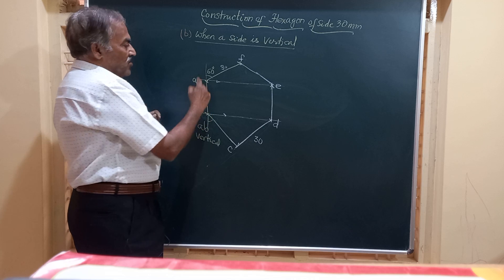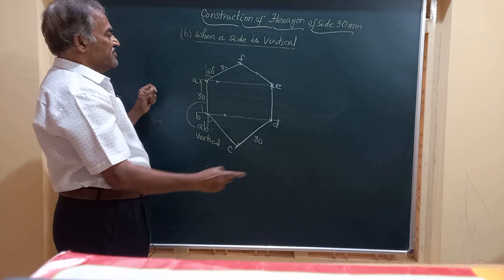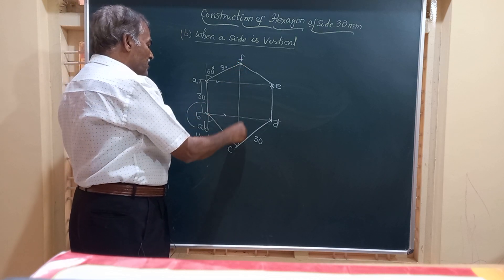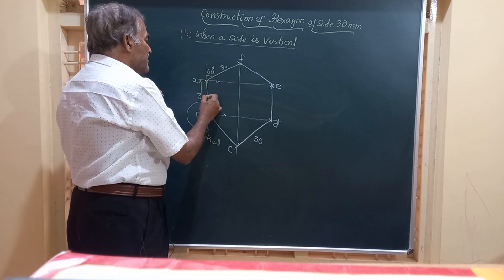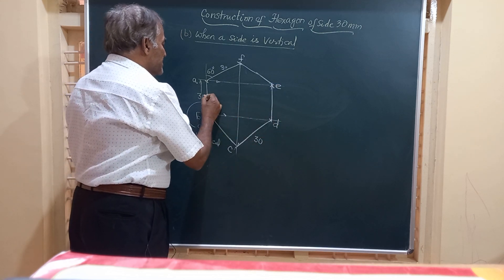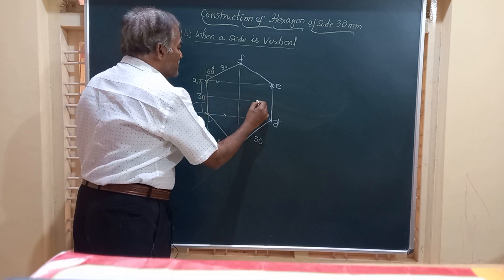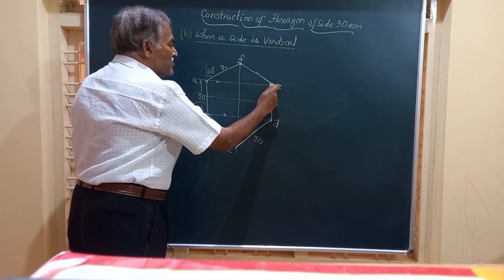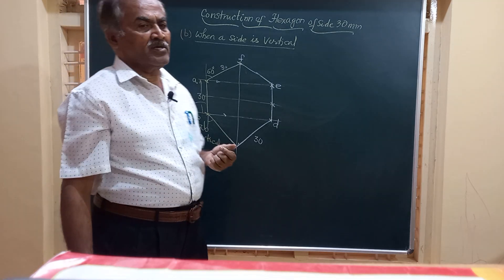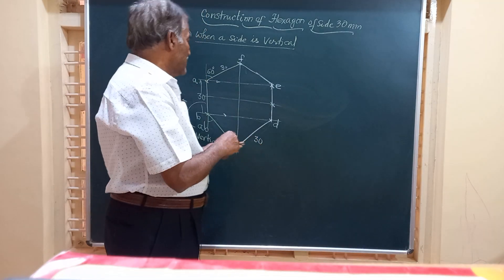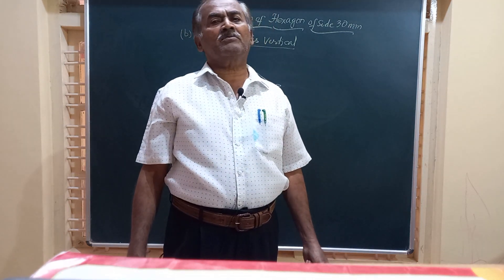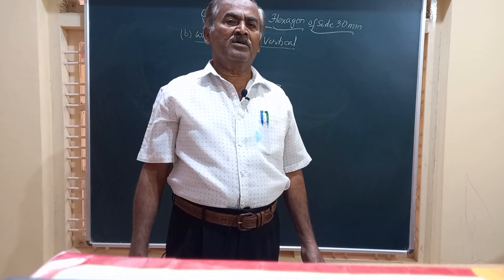When one side of the hexagon is vertical, if the construction is correct, a vertical line drawn through F should pass through C. Also, the perpendicular bisector of AB or of ED should be horizontal. Drawing a horizontal line through the midpoint of the figure should divide ED into two equal parts. This is how we construct the regular hexagon when one of the sides is vertical. If you like this video, do share with your friends. Have a wonderful day.